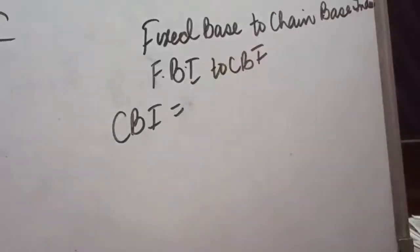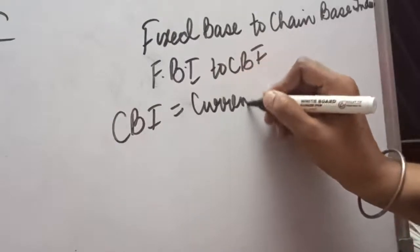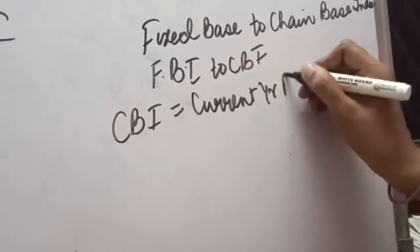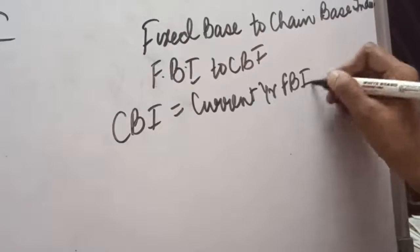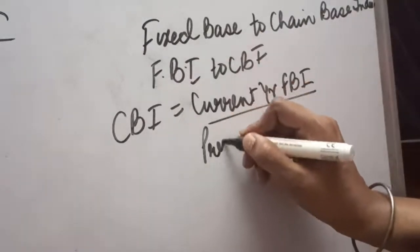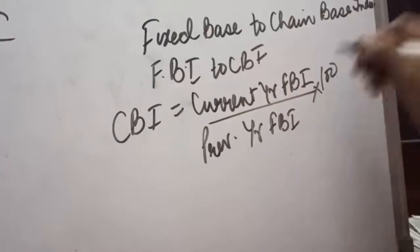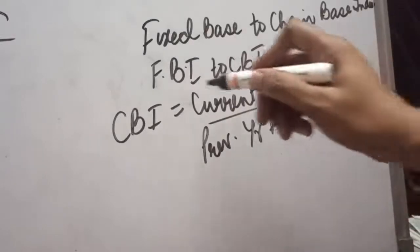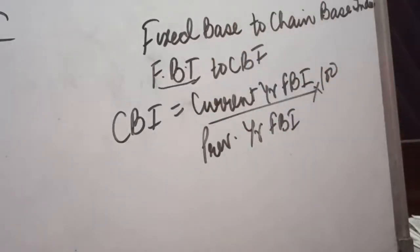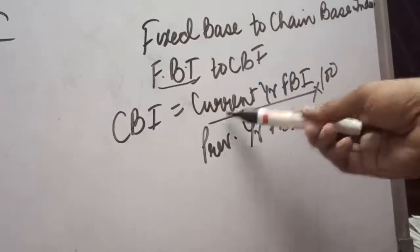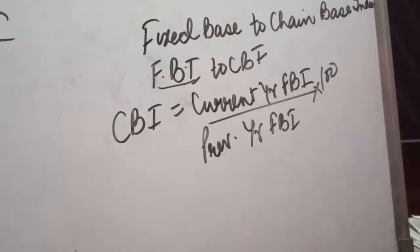The formula for the calculation is very simple. Current year FBI divided by previous year FBI multiplied by 100. You will already be given FBI in the question. You have to convert it into CBI — just take current year FBI, divide this with the previous year FBI, and multiply it by 100. Let us see one example where we will be converting fixed base index to chain base index.